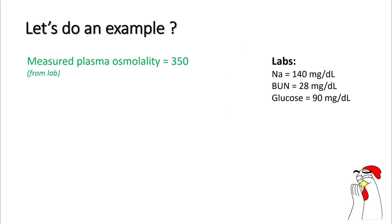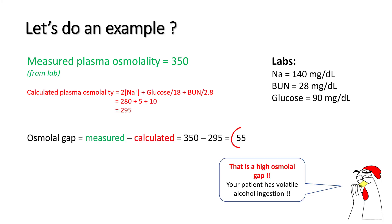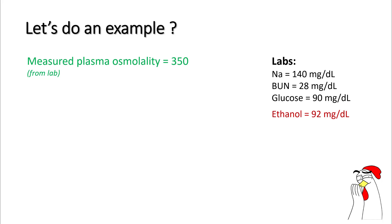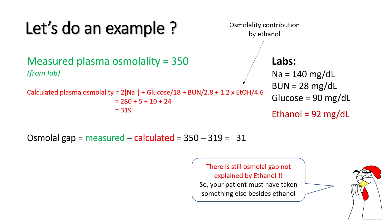Let's do an example. Say your measured plasma osmolality from the lab was 350 milliosmol, and you have sodium of 140, BUN of 28, and glucose of 90. Your calculated plasma osmolality is 295, and your osmolal gap is 55. This is a high osmolal gap, so your patient has volatile alcohol ingestion. If your lab can measure ethanol — say the lab value was 92 — you can calculate the osmolality contribution from ethanol by dividing the alcohol level by 4.6 and adding it to the calculated plasma osmolality. The osmolal gap is still 31, meaning there are still extra osmols not explained by ethanol, so the patient may have ingested additional alcohols.